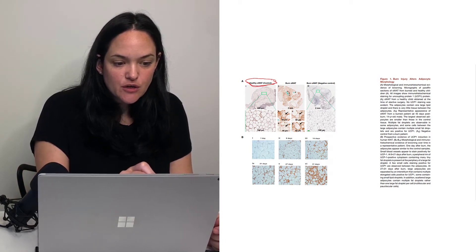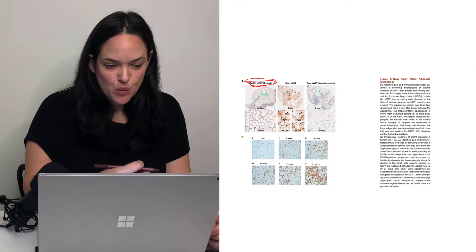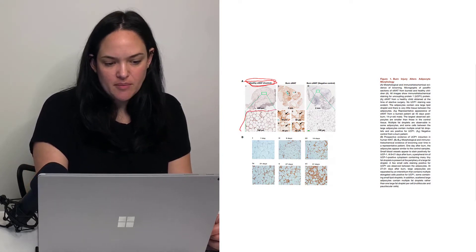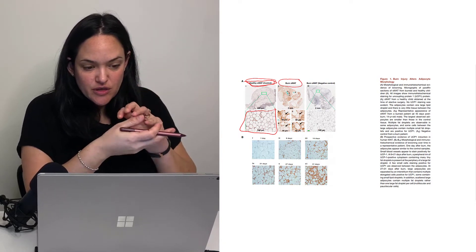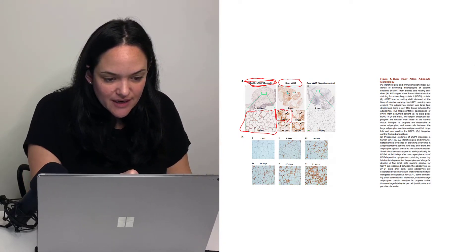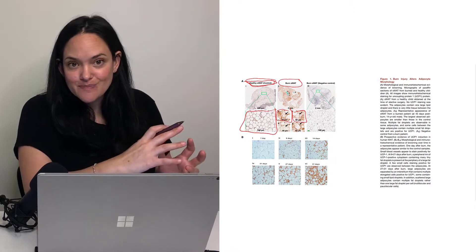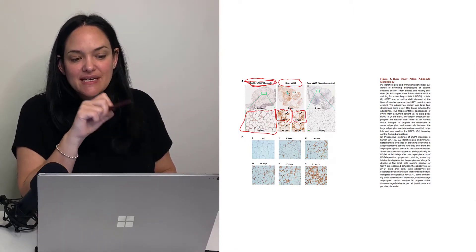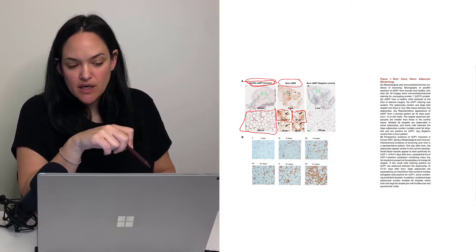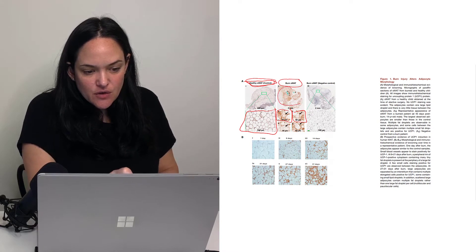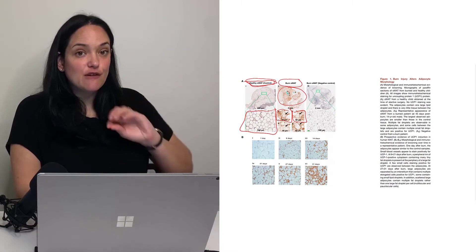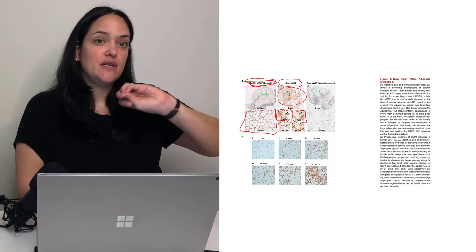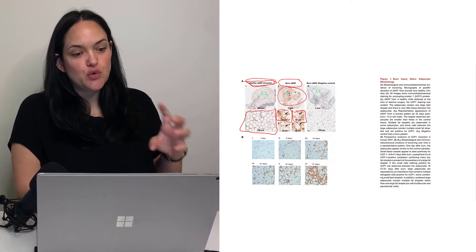Compared to healthy controls and looking at the subcutaneous white adipose tissue, we do see a white-like appearance. Whereas in the subcutaneous fat of a burn victim, certain areas look more brown-like. These samples have been stained for uncoupling protein one, and we'll see a significant increase in the visualization of uncoupling protein one in formerly white fat that has been induced towards brown due to the stress of a burn situation.